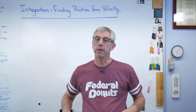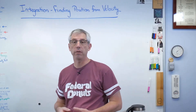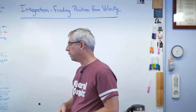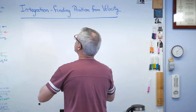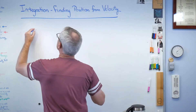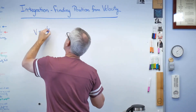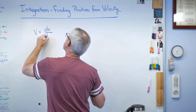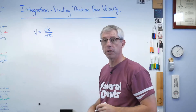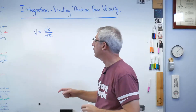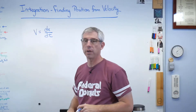Now, if you know the definition of velocity, it is the derivative of position. So mathematically it looks like this: V equals dx/dt — change in position over change in time. That's velocity.